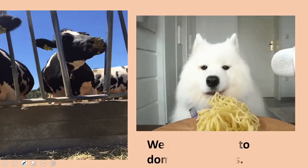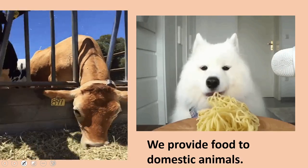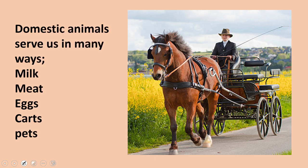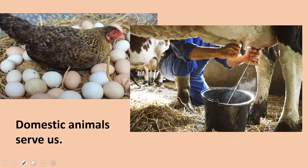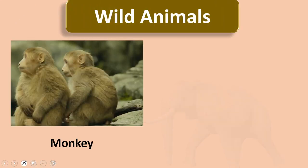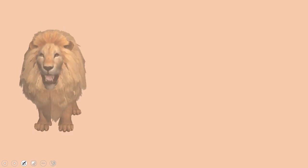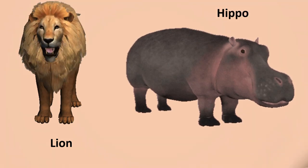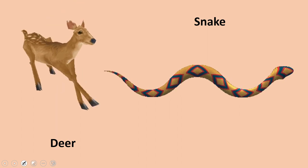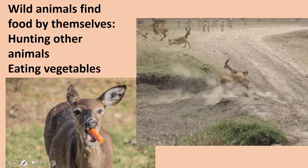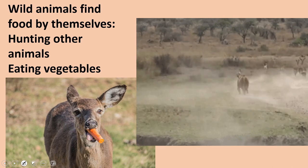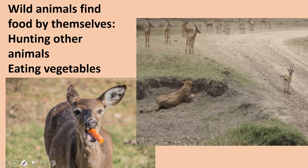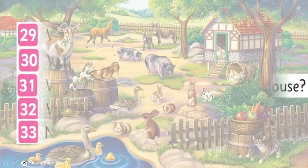Wild animals are like monkey, elephant, lion, hippo, deer, and snake. These all are wild animals which live in the jungle. Kangaroos also feed on their own food. We cannot keep them at home because they are harmful.